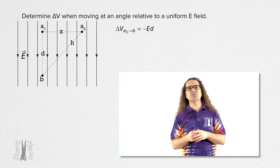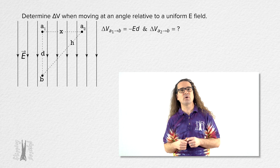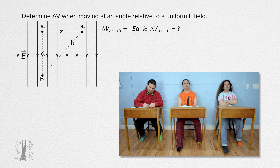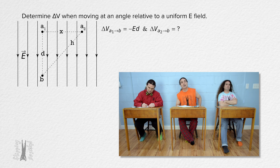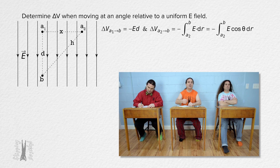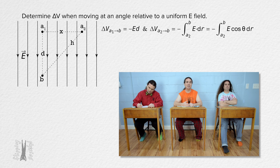Bobby, please determine the electric potential difference when going from point a2 to point b. The electric potential difference from point a2 to point b — let's use the equation with the cosine theta in it. Theta is defined as the angle between the direction of the electric field and the direction of the infinitesimally small displacement dr, which is directed from a2 to b.